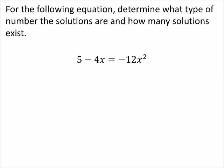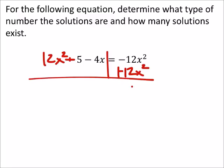All right, let's try this one. Same idea. On this one, though, I'm going to add a 12x squared to both sides. So I got a 12x squared plus that 5x stuff. This is going to be zero.